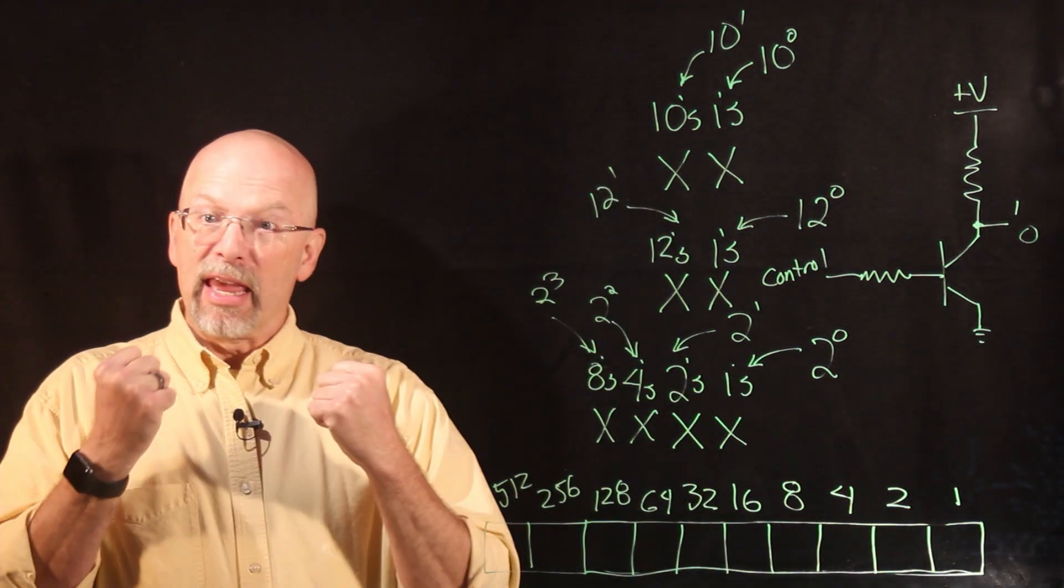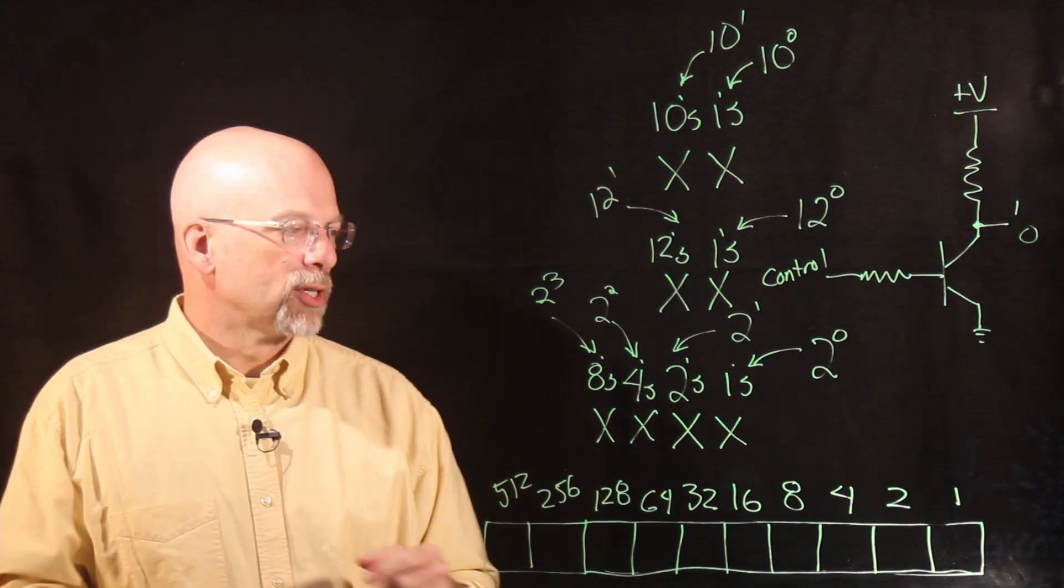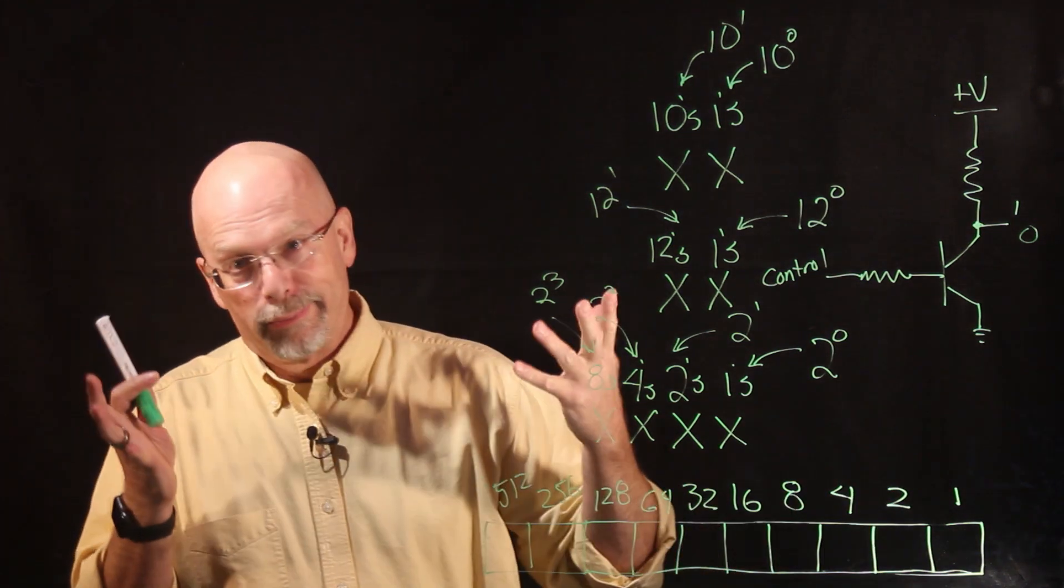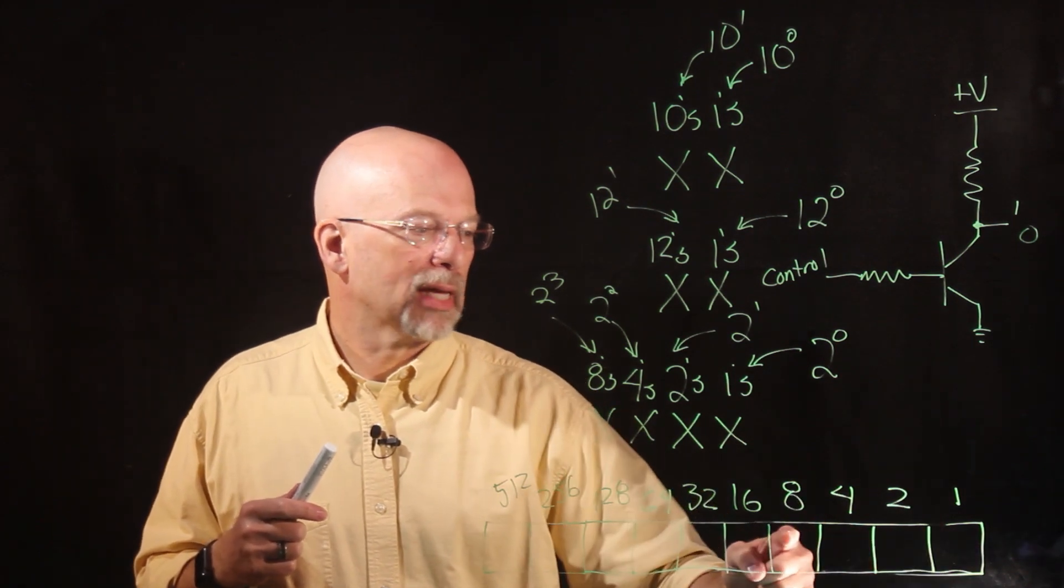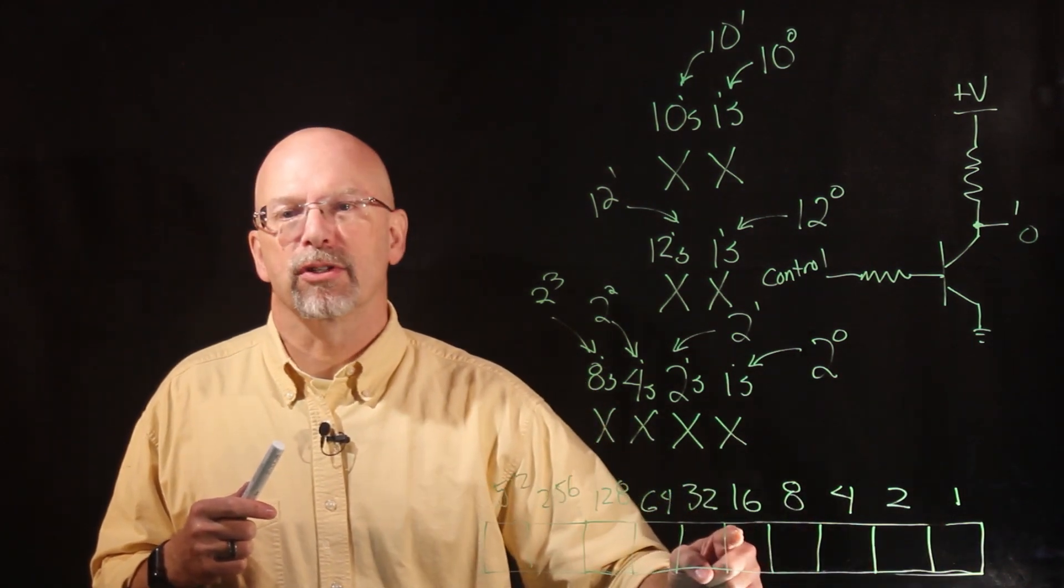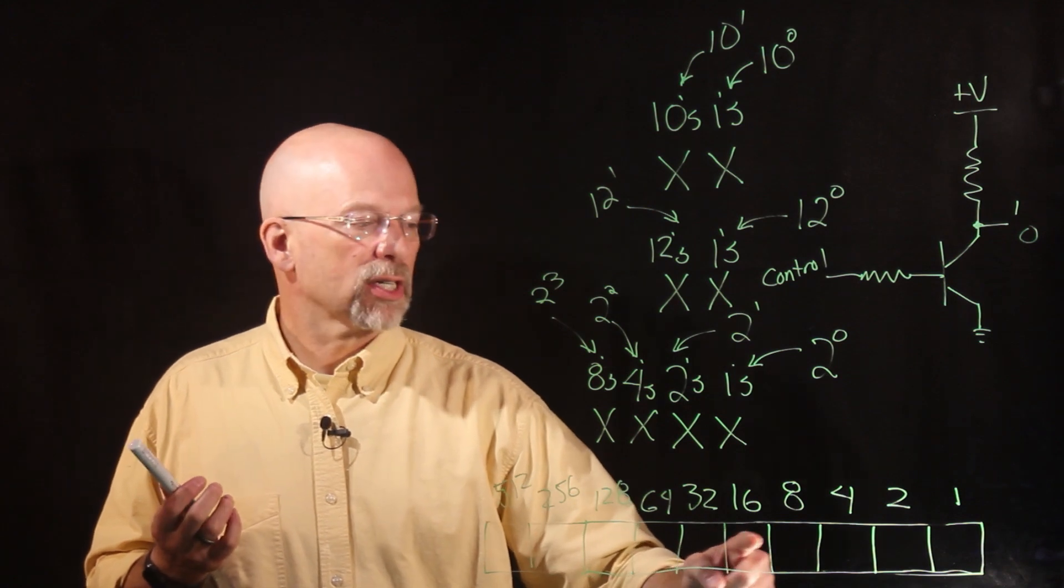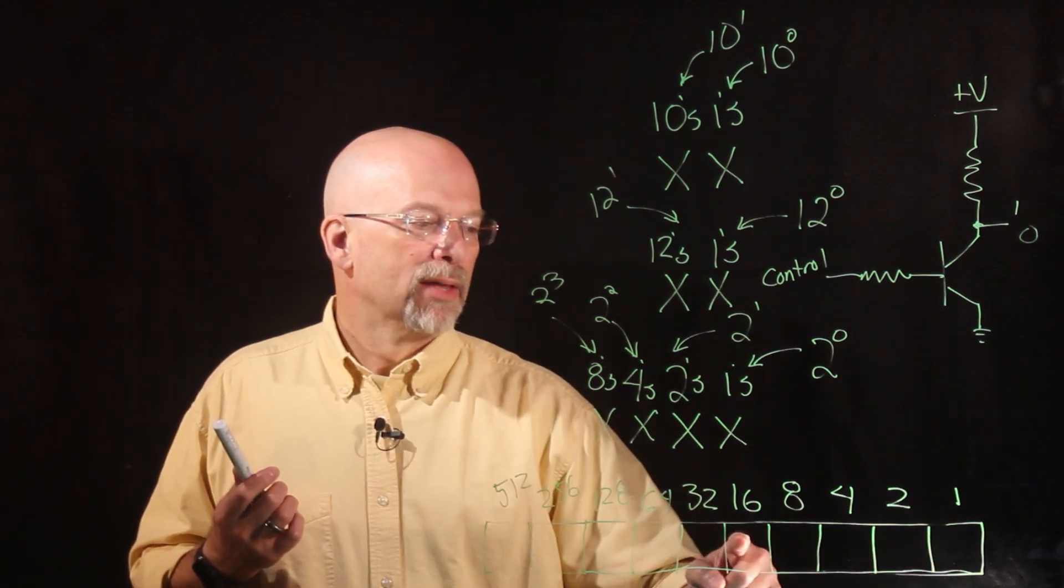Okay, so those are the fingers, right? So we've got all of our fingers representing those positions. Well, if we were to perhaps turn on or enable or activate the, say, the ones position, the eighths position, the sixteens position, well what that would give us is 16 plus 8 plus 1. That'd be 24, 25.